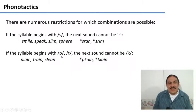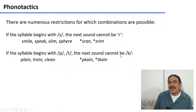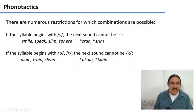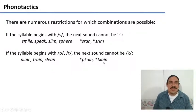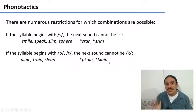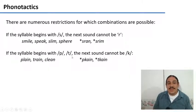Likewise, if you start a syllable with a p or t, the next sound cannot be a k. So you can have words that start with p or t, like 'plain,' 'train,' and 'clean,' but you cannot have syllables like 'p-cane' and 't-cane' as possible syllables of English. The description of all of these conditions is called phonotactics.